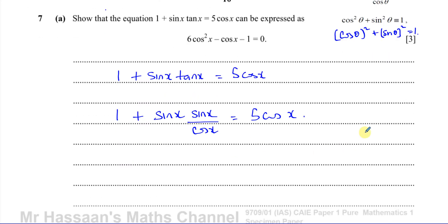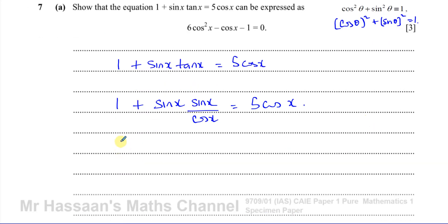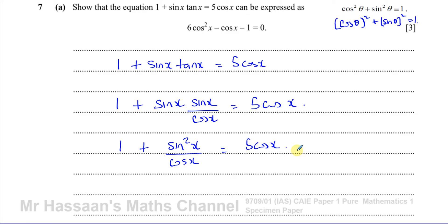Sine x times sine x gives sine squared x, so we have 1 plus sine squared x over cosine x equals 5 cosine x. Now I want to get rid of the fraction, so I'll multiply every term on both sides by cosine x. The cosine x cancels on the left fraction, giving cosine x plus sine squared x equals 5 cosine squared x.